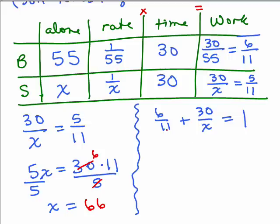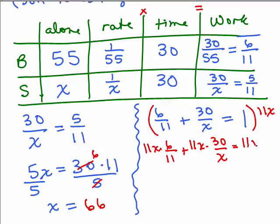Now what if you did it this way? You might multiply both sides by the least common denominator, which is 11x. So I'm going to multiply each term by 11x. 11x times 6 elevenths plus 11x times 30 over x and 11x times 1. So for the first term here, the 11's cancel and I have 6x, for the next one the x's cancel and I have 11 times 30. And nothing cancels on the right side of the equal sign, I have 11x.